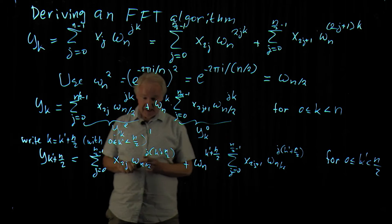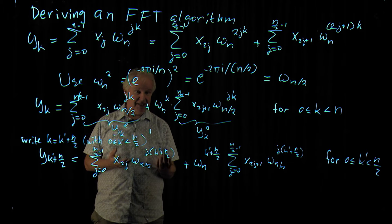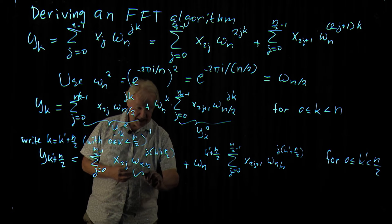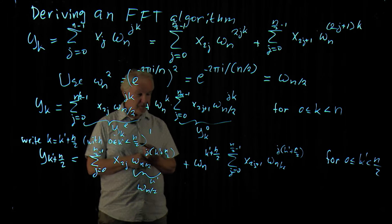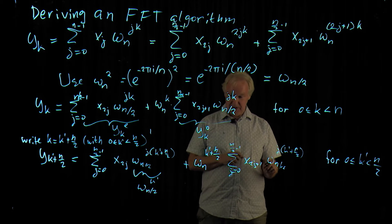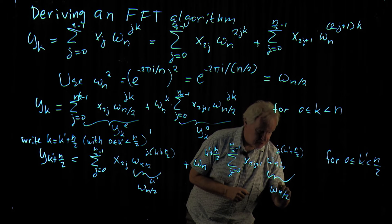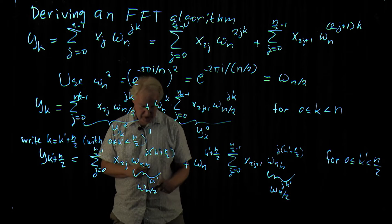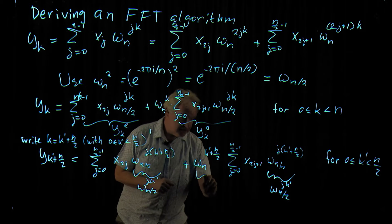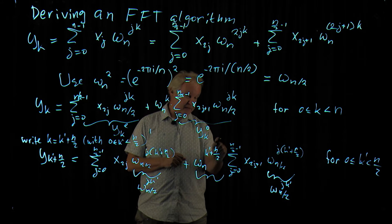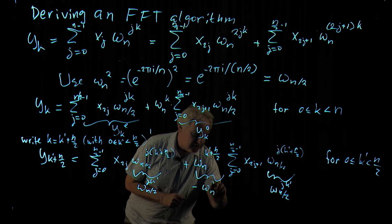Now, if we look at this, we see omega_{n/2} to the power n/2 is just 1—it's the full circle that we've seen before. So this equals omega_{n/2} to the power k prime. And here we have the same, so this also equals omega_{n/2} to the power jk prime. And omega_n to the power n/2, that's half a circle, that's minus 1. So this is minus omega_n to the power k prime.